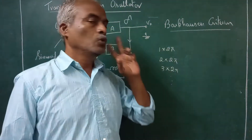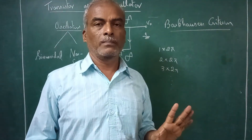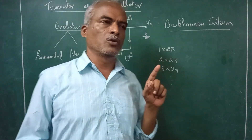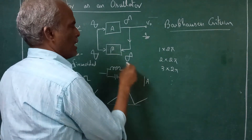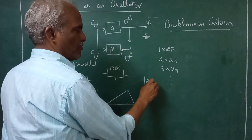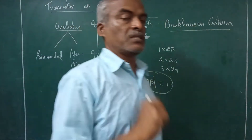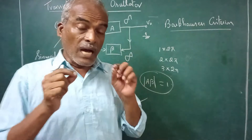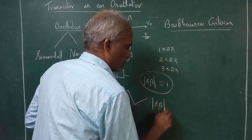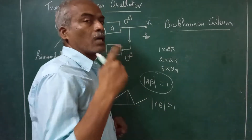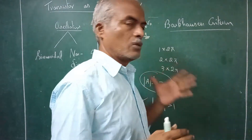Barkhausen told two rules: one is the total phase shift around the loop must be integral multiples of 2π, i.e. positive feedback. The other rule is the magnitude of Aβ — the gain of the amplifier times the gain of the beta network — must be equal to 1 to maintain oscillations. To start the oscillation, the magnitude of Aβ should be greater than 1. Once oscillation has started, to maintain it, it should equal 1.